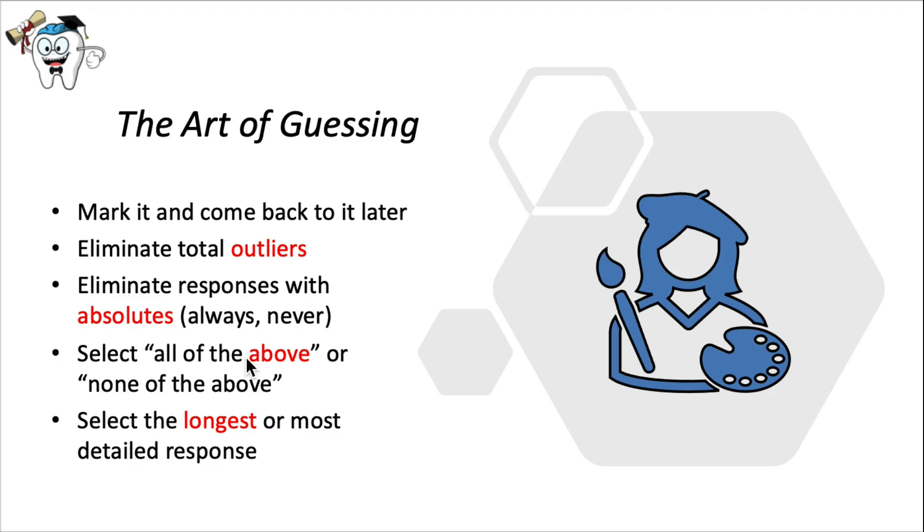An exception to that rule is 'all of the above' or 'none of the above' answer options. Questions that include these as one of the options tend to have them as the correct option more often than one of the other responses, usually from A to C.